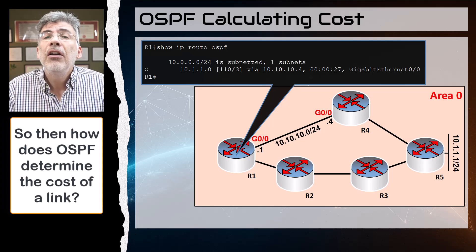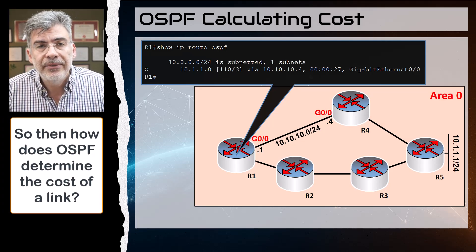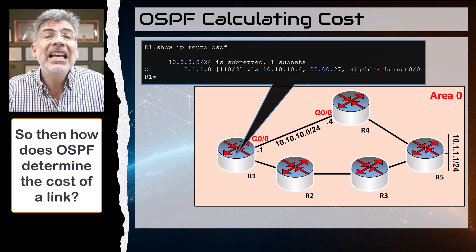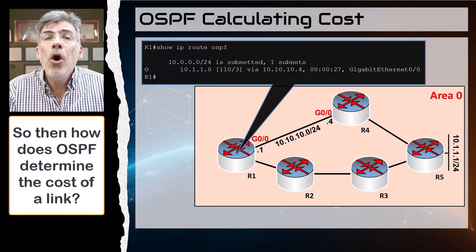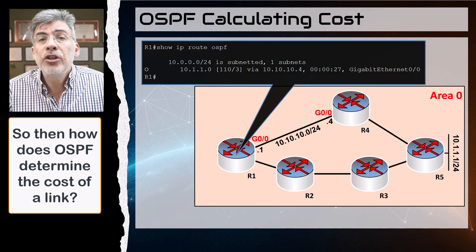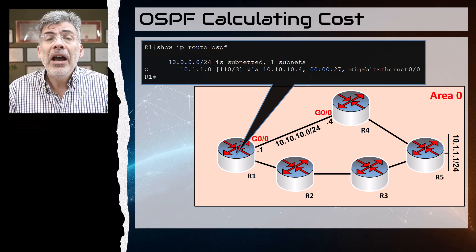So the question remains: how are these costs calculated for each individual link? Well, actually, I'm going to answer that question in detail in the next video when we talk about OSPF link costs and the reference bandwidth. So stay tuned for that.